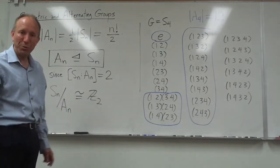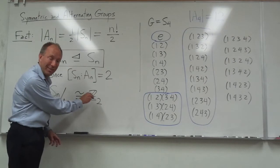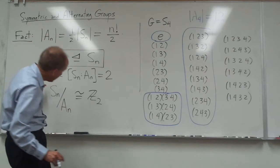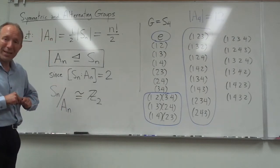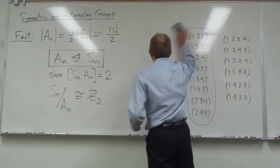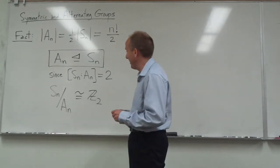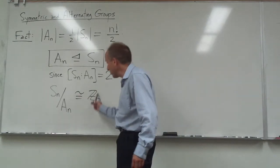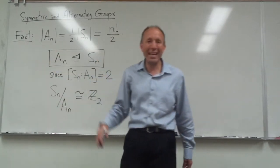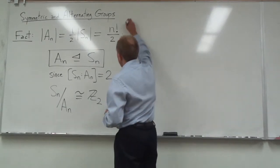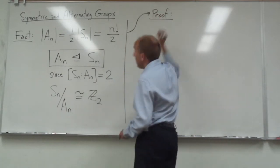Mod out by the normal subgroup An. And we know that that's a group of size 2. So it's going to correspond to Z2. Notice that all of the even permutations get mapped into 0 at the identity element here. The identity of this quotient group is the coset An. It gets mapped to 0 while the odd permutations are going to get mapped to 1. So that's something interesting to note. In fact, one way to prove that this is a little bit circular reasoning.